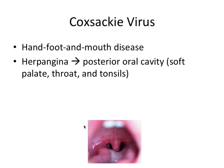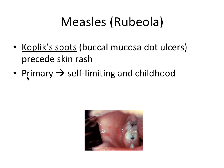The Coxsackievirus is not a herpes virus. It can result in hand, foot, and mouth disease, which affects the hands, feet, and mouth. It can also cause herpangina, which affects the posterior oral cavity — namely the soft palate, throat, and tonsils, which are part of Waldeyer's ring in the back of the throat. Both hand, foot, and mouth disease and herpangina are caused by Coxsackievirus.